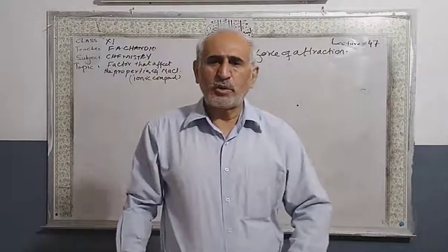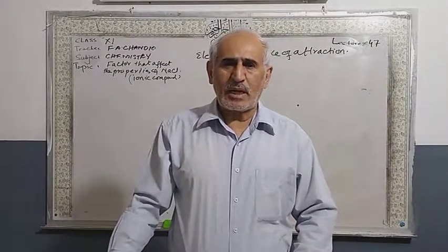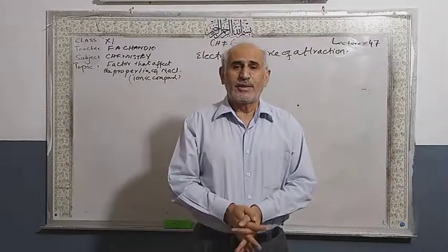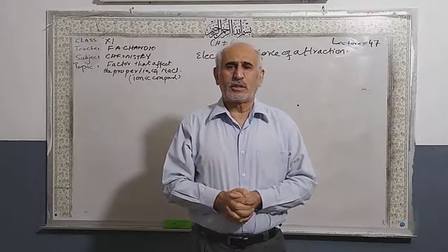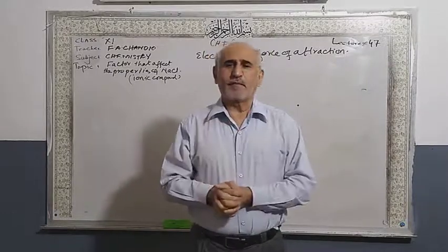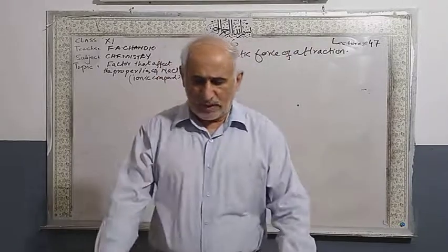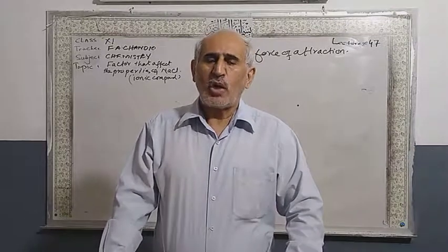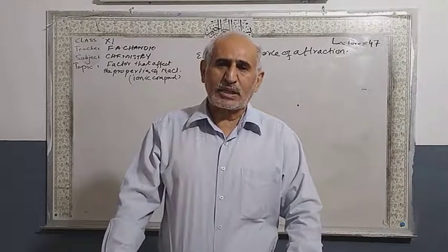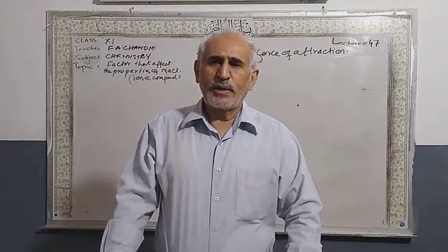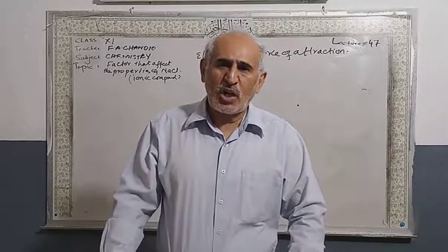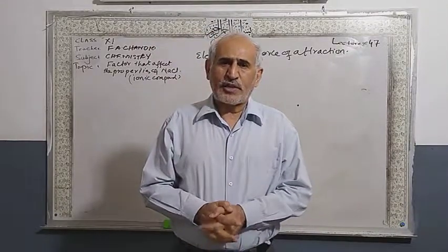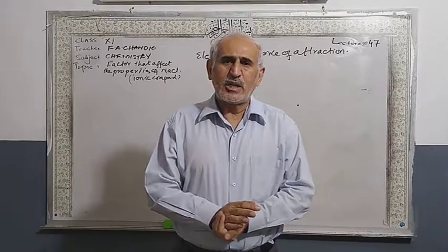In ionic compounds, also called electrovalent compounds, the bond is called an electrovalent bond — formed between positive and negative charges. Because of this positive and negative interaction, there is a great force of attraction between them. So ionic compounds are solid, rigid, have high melting point and high boiling point due to very strong forces of attraction.